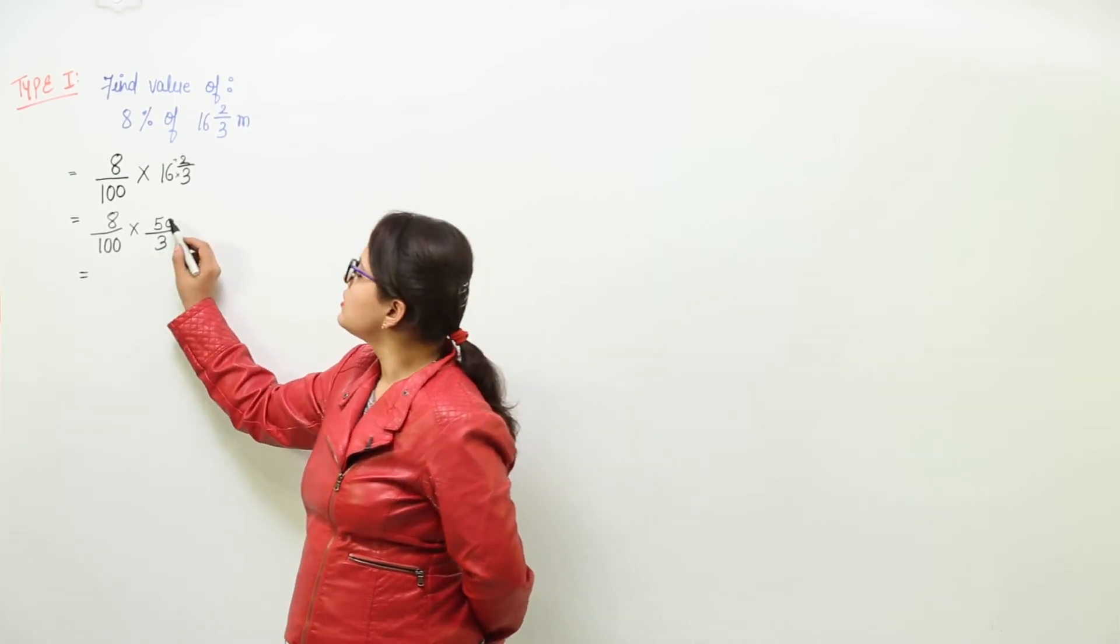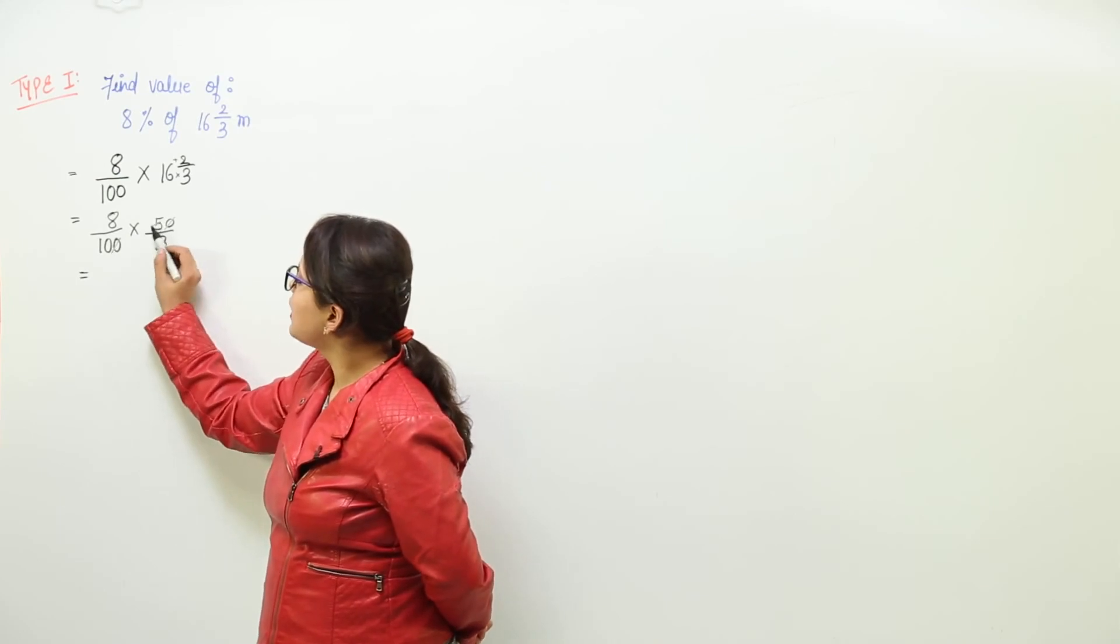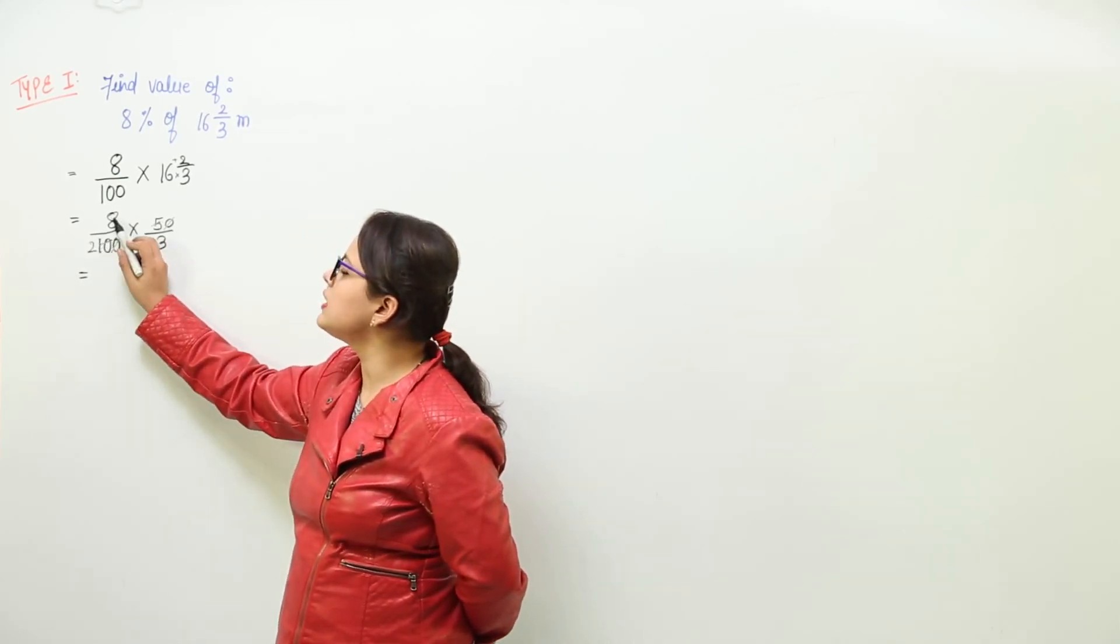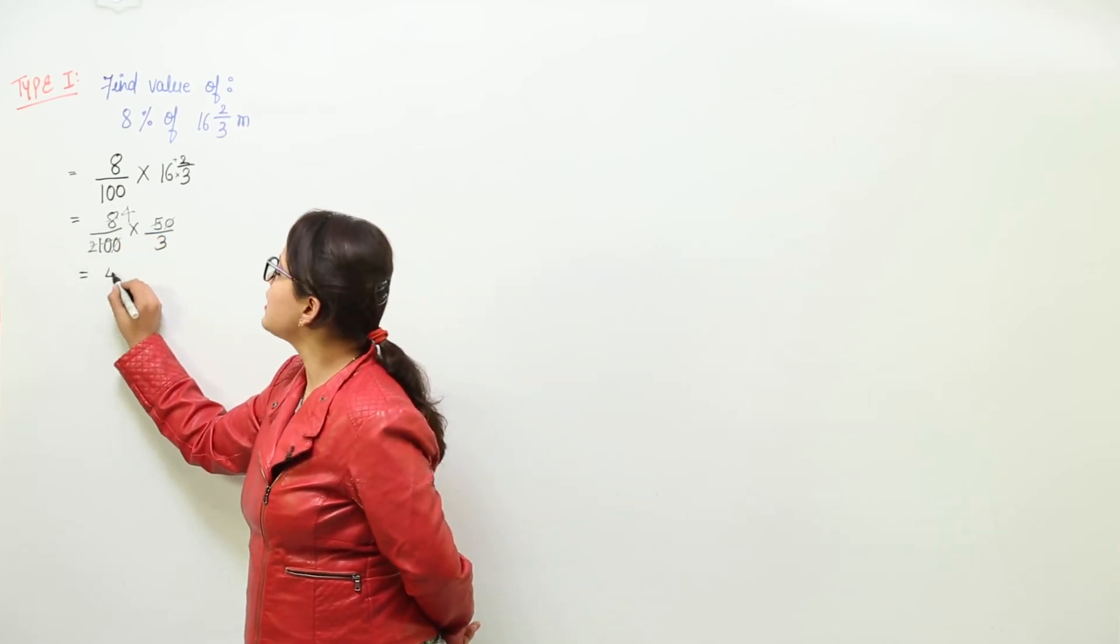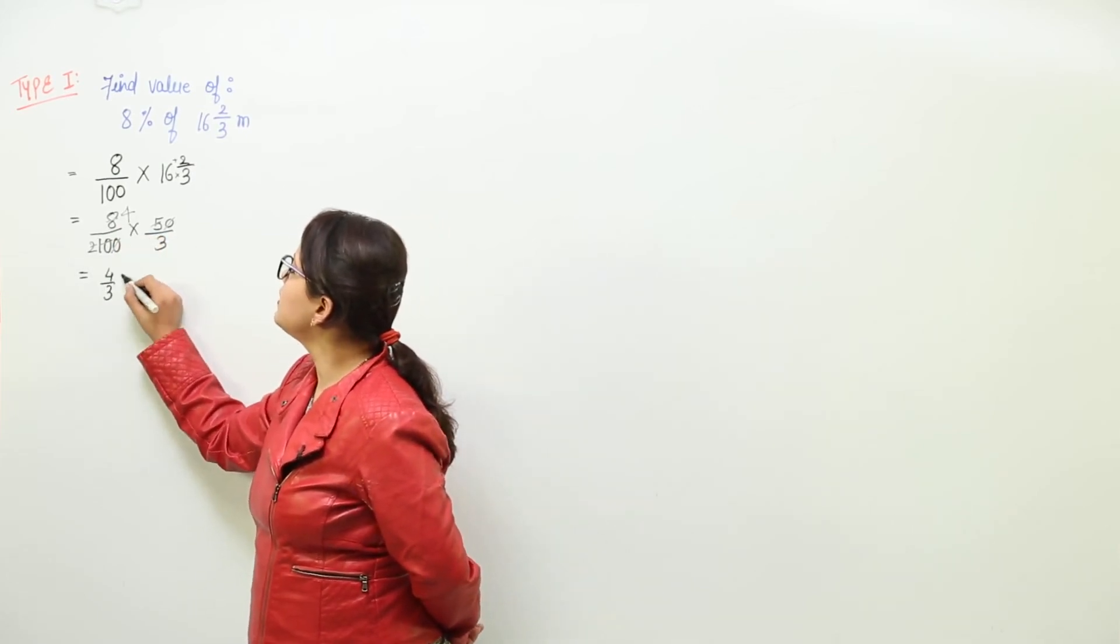So I can cut it. I will cut the zeros. I got 2 here, and now 2 and 8 also have common factors. So I cut that also. That means I am left with 4 by 3 meters.